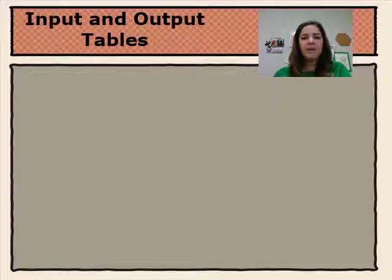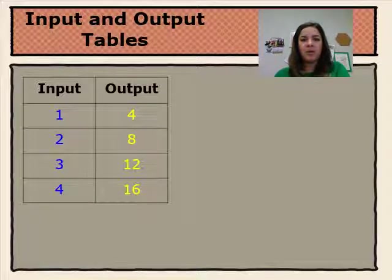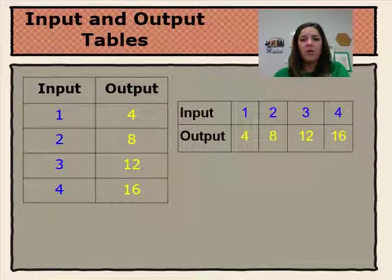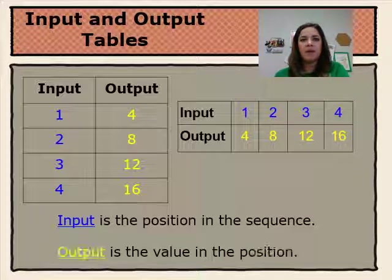Input and output tables can be represented two ways. The table can be created vertically with the relationship between input and output numbers across, or horizontally with the relationship between the input and output numbers up and down. The input is the position in the sequence, and the output is the value in the position.